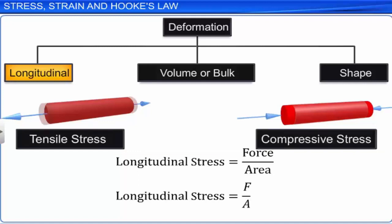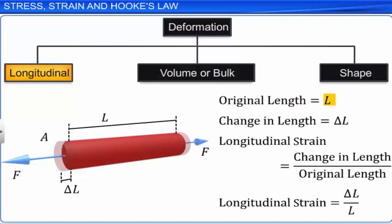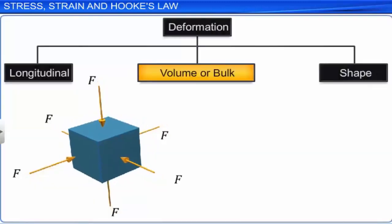When deforming forces are applied perpendicularly to a body's surface at every point, the volume of the body changes, and the stress generated is called bulk stress or volume stress. Forces acting perpendicularly inward at each point on the surface of a body are equivalent to a uniform increase in external pressure. Therefore, bulk stress is defined as a change in pressure delta P. If the volume of a body V changes by delta V, then the fractional deformation, also called the bulk strain or volume strain, is equal to the ratio of delta V to V.